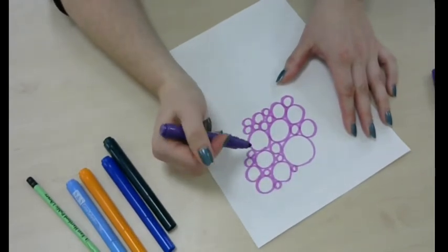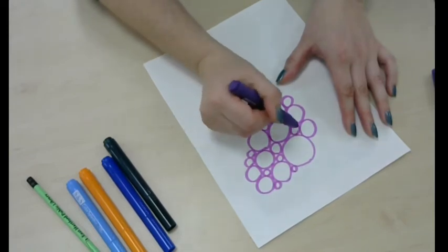Once you've covered as much as you'd like to, you can color all the little spaces that aren't circles in between them.